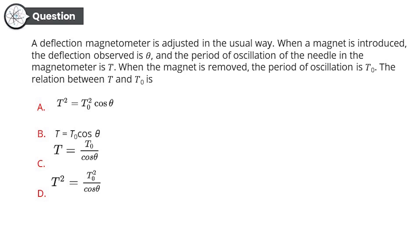Moving on to question number three. This looks pretty simpler than the previous question, so let's get it started. A deflection magnetometer is adjusted in the usual way. When a magnet is introduced, the deflection observed is θ and the period of oscillation of the needle in the magnetometer is T. When the magnet is removed, the period of oscillation is T₀. The relation between T and T₀ is: